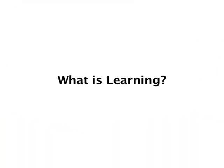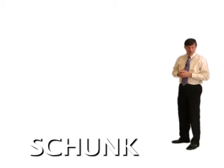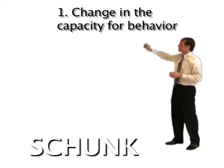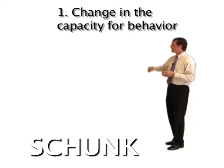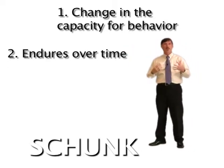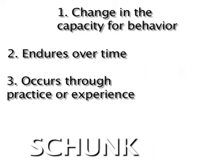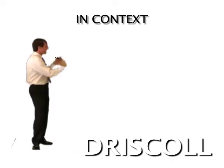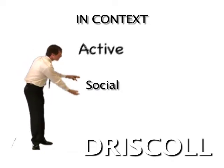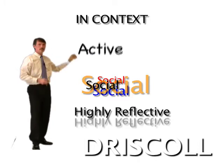So we spoke of teaching — what about learning? I like Schunk's definition, where he identified at least three attributes required for successful learning. One would be a change or change in capacity for behavior, which is difficult to measure. Second, it's going to endure over time — we hope it's there when we need it. Third, it occurs through some sort of practice or experience. Another definition is Driscoll's from 2002, which states that learning occurs in context, is active, social, and highly reflective — all taking place in a dynamic learning environment.